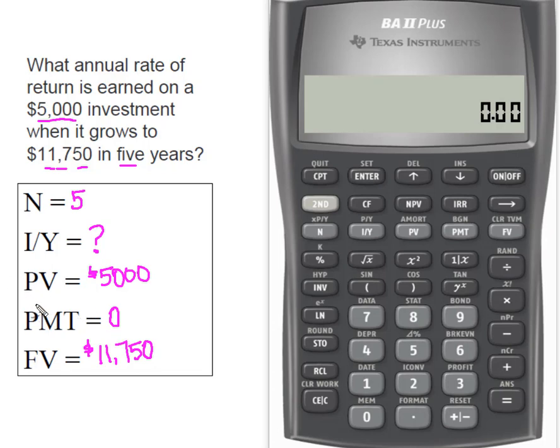So remember, either present value or future value needs to be negative. We're going to make our present value negative. Think of this, that you're writing a check out of your checking account for $5,000, which is a negative. You're going to deposit it with some type of investment or an investment broker. And in five years, you're going to have this $11,750.